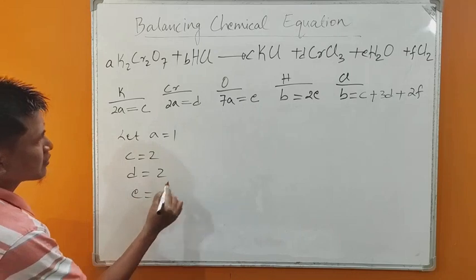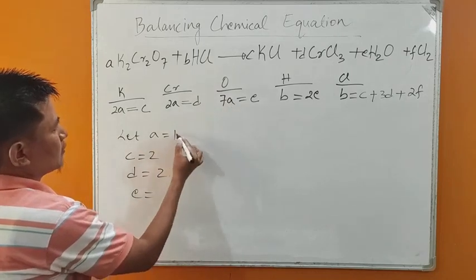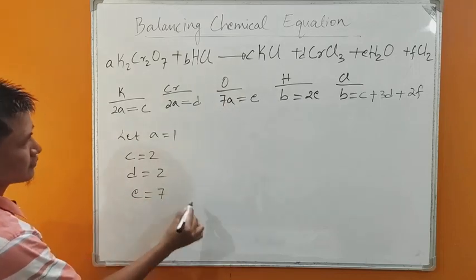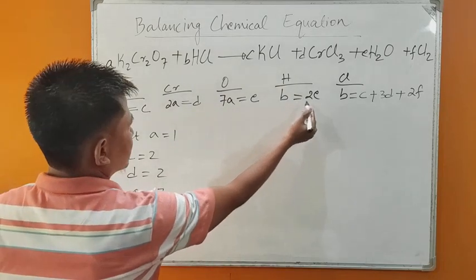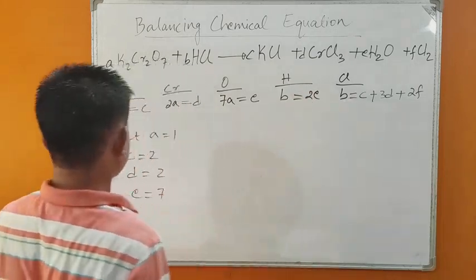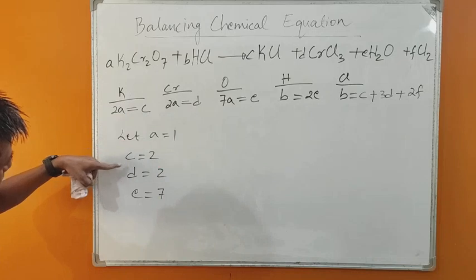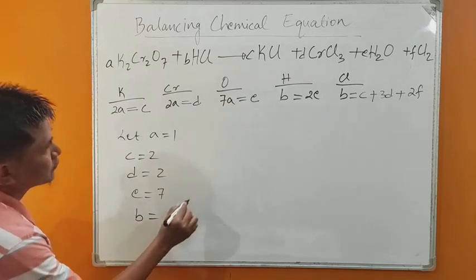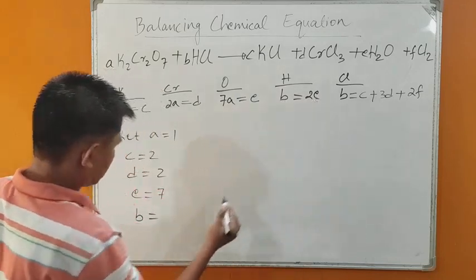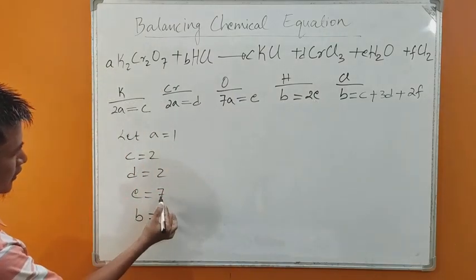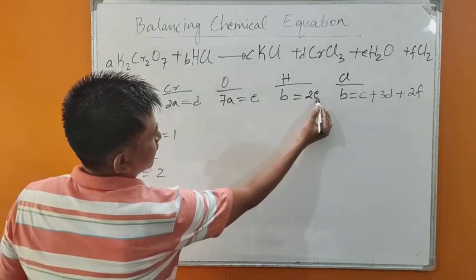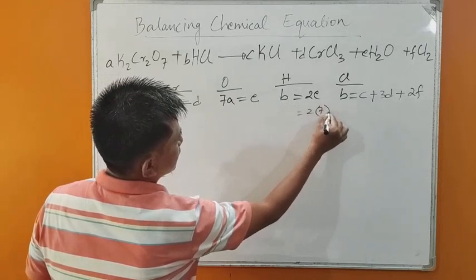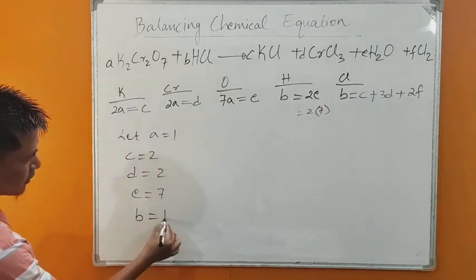E equals 7A. A is 1, so 7 into 1 is 7. E means 7. We need to find B. B equals 2E. E means 7, so B equals 2 into 7. 2 times 7 is 14. So B equals 14.